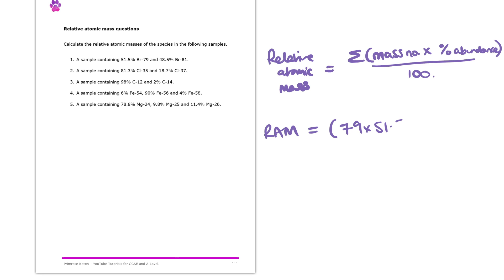we will do 79 times 51.5 plus 81 times 48.5, and then we will divide that by 100. So what we've done there is mass times percentage plus mass times percentage. And that ends up giving us 79.97. And that there is the RAM.